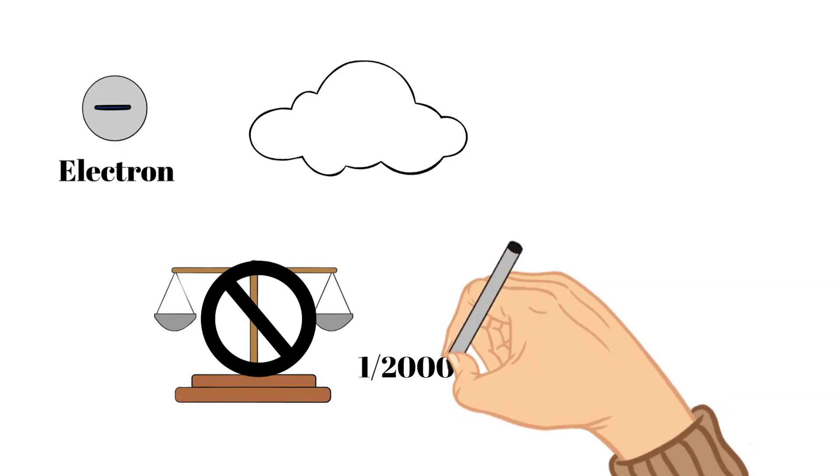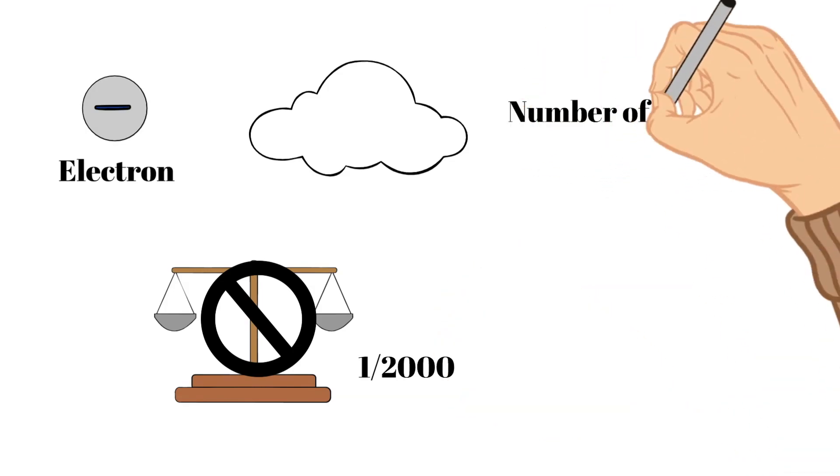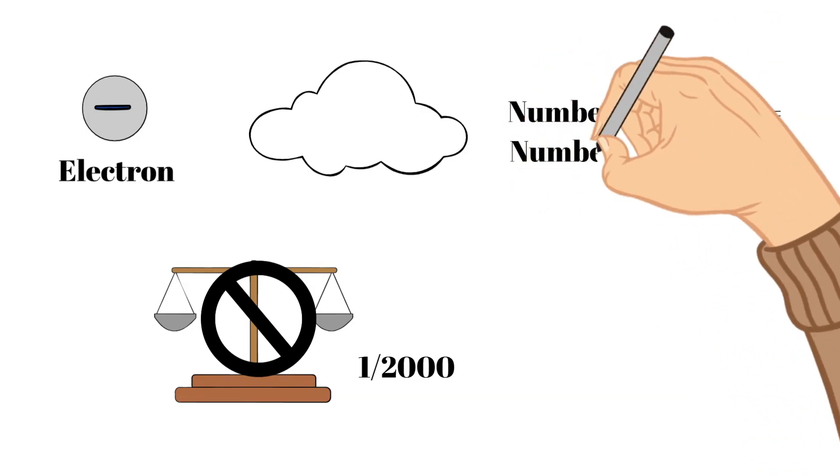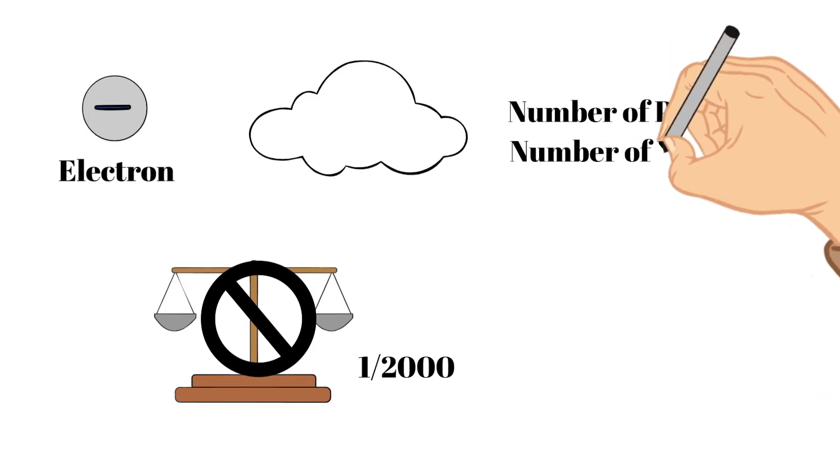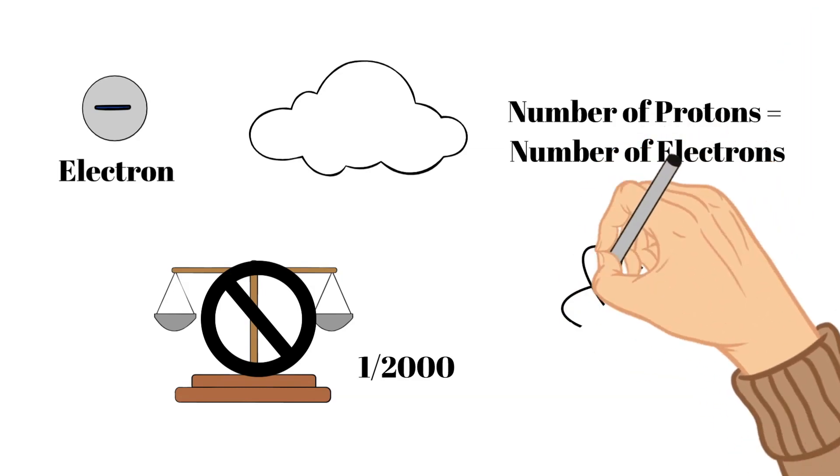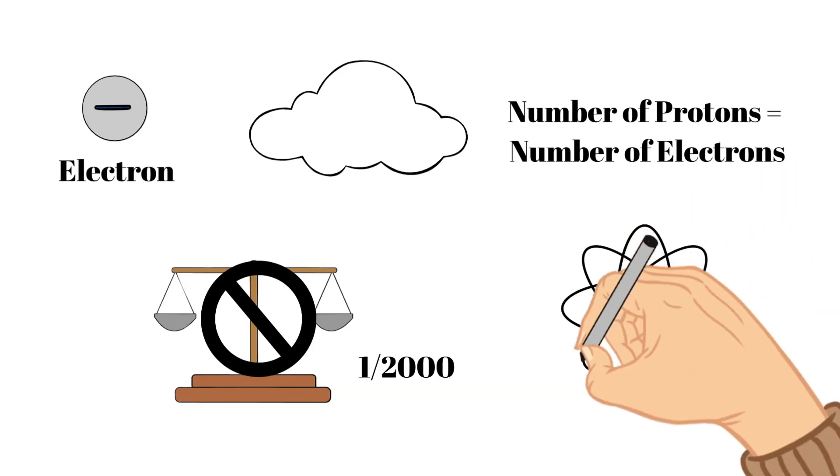Now remember we have talked about previously that atoms tend to favor being neutrally charged. So there is the same amount of electrons as there are protons in the nucleus of a stable atom. Now atoms can become unstable but we're not going to dive into that in this video.